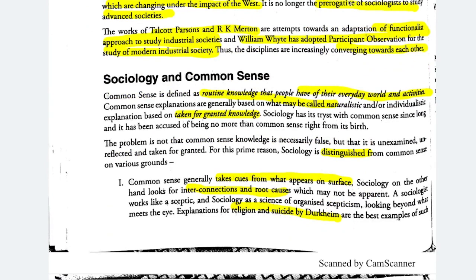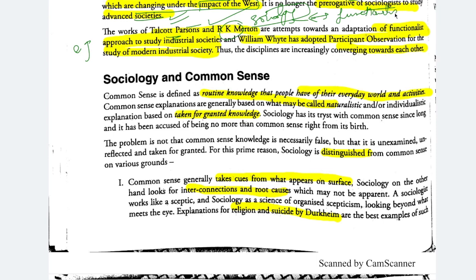Both disciplines are equally useful in studying African and Asian societies — they converge there because those societies are changing under the impact of the West. Talcott Parsons and R.K. Merton, sociologists, adapted the functionalist approach for sociology — but the functional approach basically came from anthropology. And anthropologist William White adopted participant observation for the study of modern industrialized societies. These disciplines are increasingly converging towards each other.